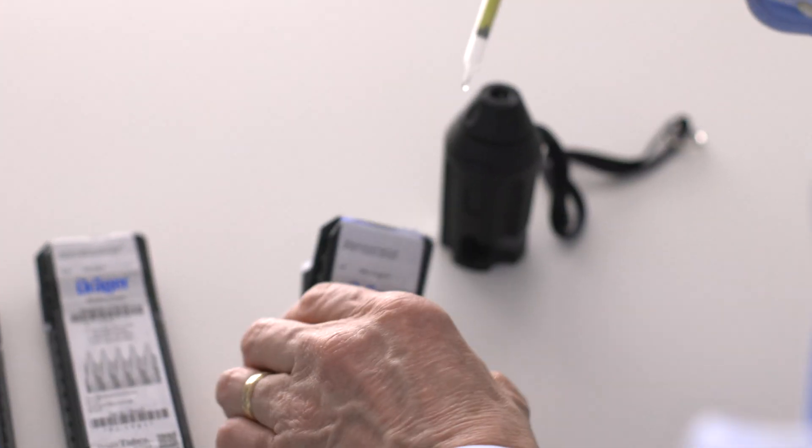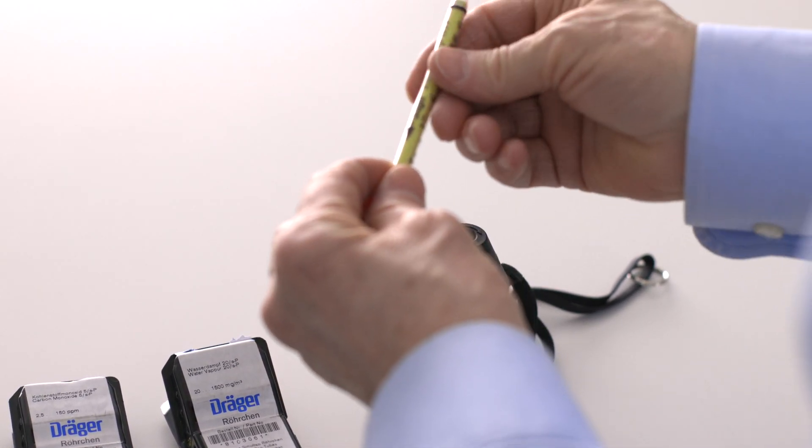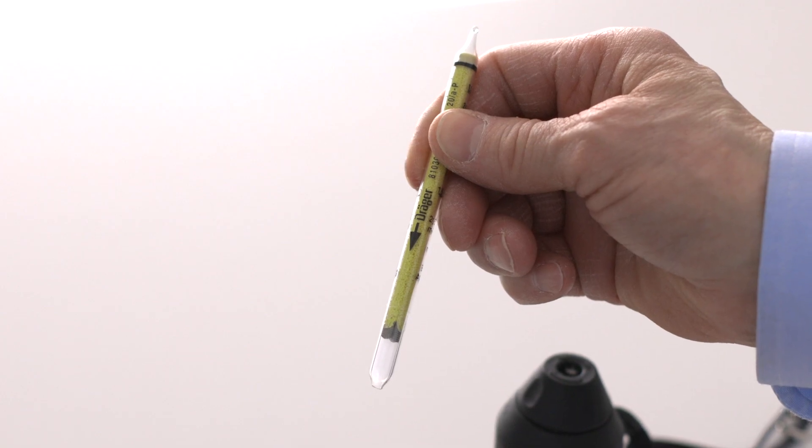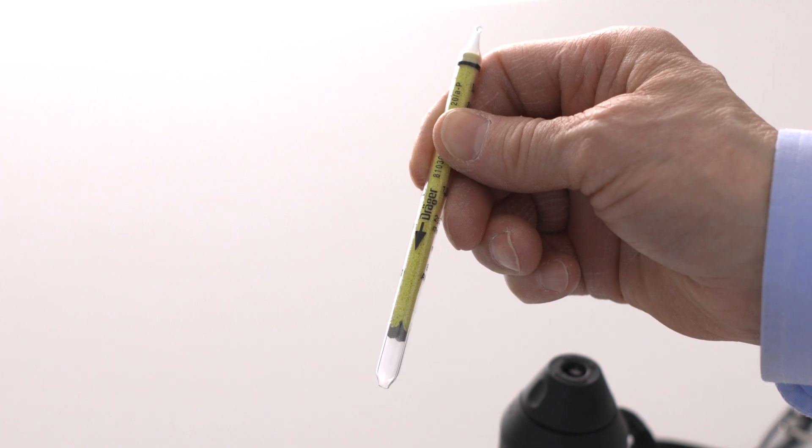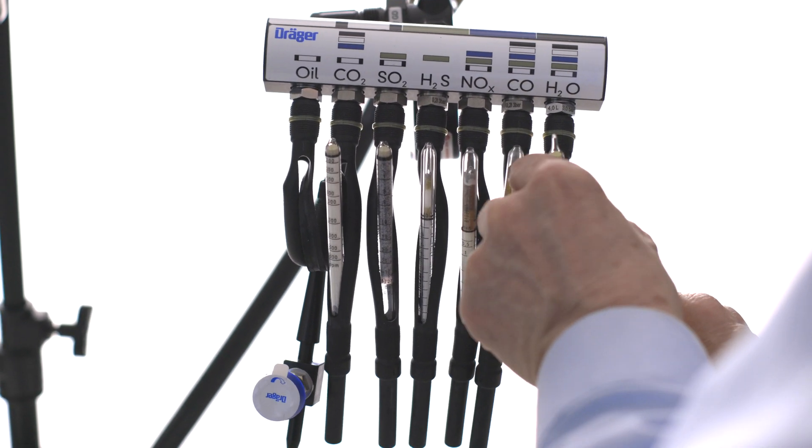Finally, take one of the water vapor tubes, removing only the tip from the outlet end of the tube at this time, which is the end the arrow points towards. This tube is extremely sensitive to ambient humidity, so we won't remove the other tip until we're ready to start the test. Insert the tube into the holder, leaving the top part disconnected.